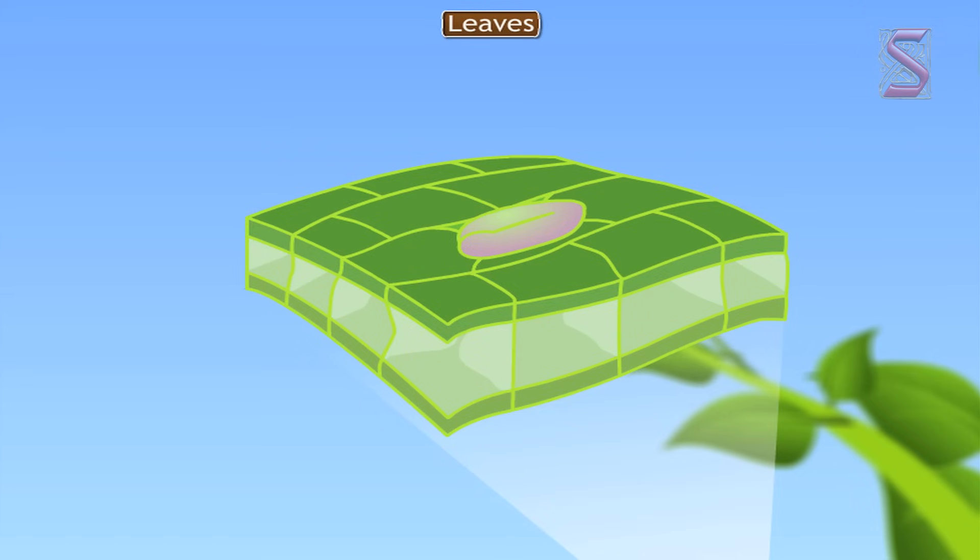The inner wall of each guard cell is thick and elastic. When turgor develops, the thin outer walls of the stoma bulge out forcing the stoma to open. When the guard cells lose turgor, the elastic inner walls regain their original shape and the stoma closes.